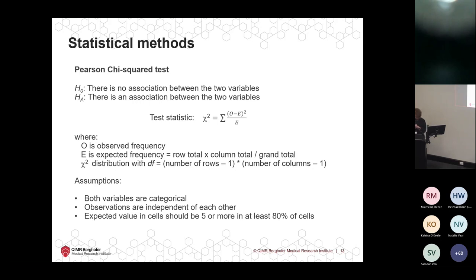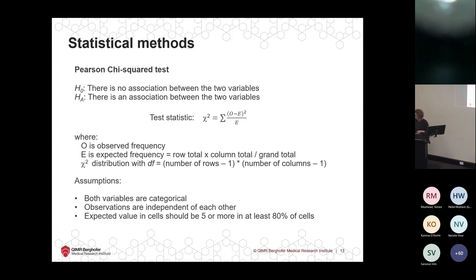The Pearson chi-squared test: the null hypothesis is no association between variables; the alternative is that there is an association. It takes into account observed and expected frequencies and compares to a chi-squared distribution. Assumptions: variables must be categorical, observations must be independent, and the expected value of cells needs to be five or more in at least 80% of cells. Going back to the data set: Analyze, Descriptive Statistics, Crosstabs — group into columns, categorical variables into rows, ask for chi-squared tests and column percentages.